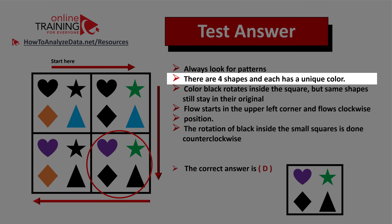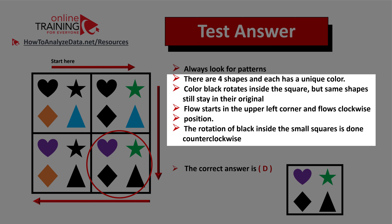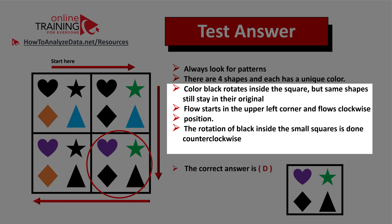There are four shapes inside the square, and each shape has a unique color. Shapes stay in place — the only thing that changes is the black color for each shape. The pattern of the black colors inside the squares rotates counterclockwise. Always look for patterns. You see that the flow among the shapes starts in the upper left corner and goes clockwise, but the rotation of the black color inside the squares goes counterclockwise. That's the tricky part of the question. The right answer here is choice D.